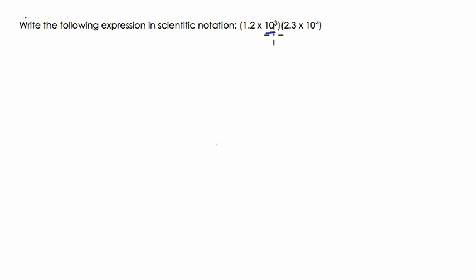I'm going to multiply 10 to the third by 10 to the fourth. That's 10 to the seventh. We add those exponents. But we're still stuck with the 1.2 times 2.3.